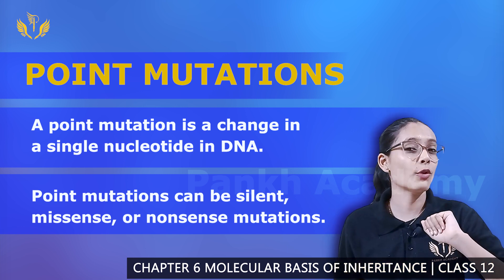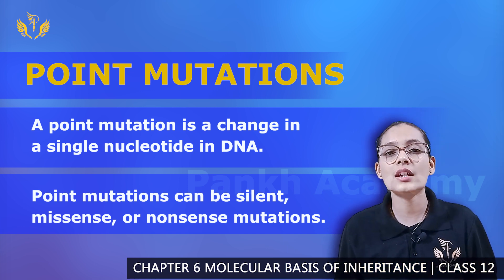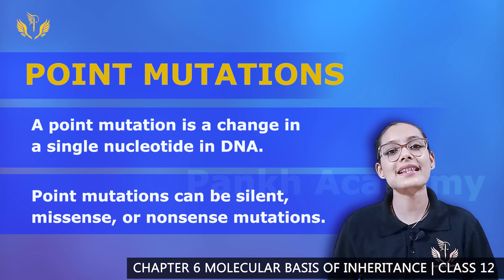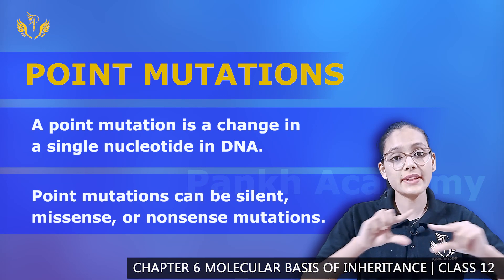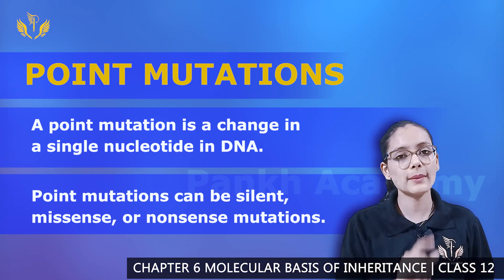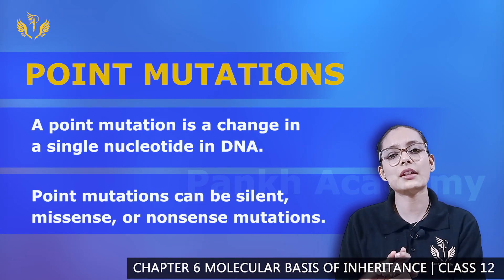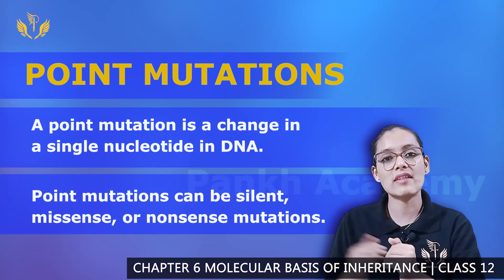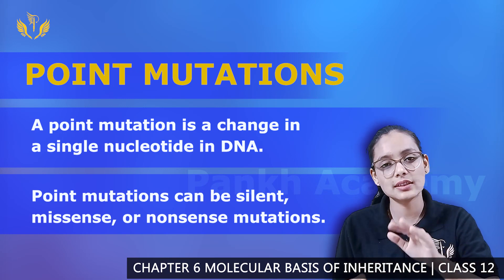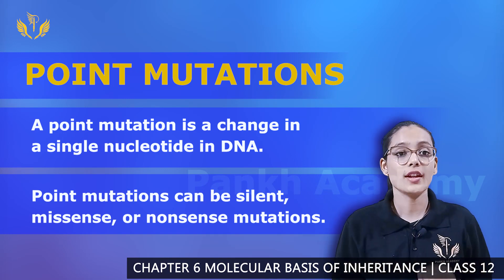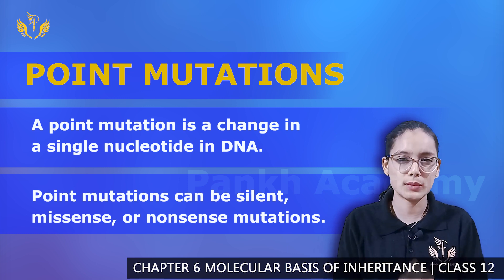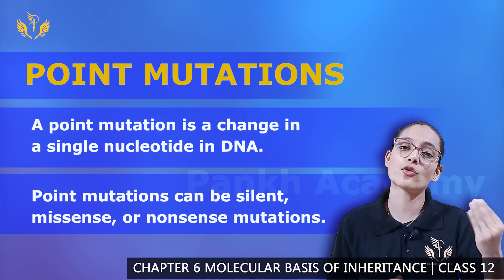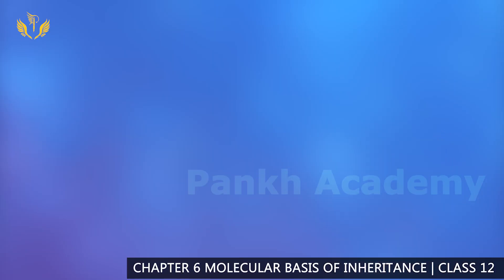An example of point mutation is sickle cell anemia. In sickle cell anemia, a change in the beta-globin chain causes glutamic acid to become valine. This leads to the red blood cells converting into a sickle form and resulting in reduced oxygen transport.